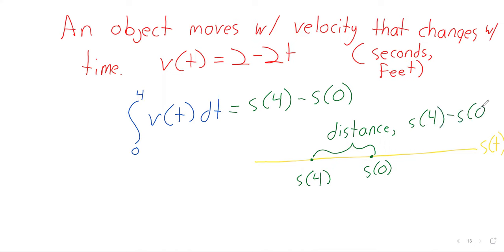This net change is negative because, on net, the object moved to the left — it sometimes went right and sometimes went left, but it ended up to the left of where it started. This is not how far the object moved total; it's like your odometer versus your displacement. The definite integral gives you net change in position — where you ended up versus where you started.